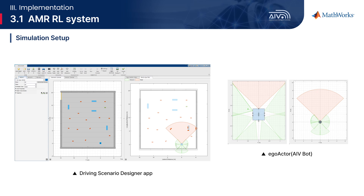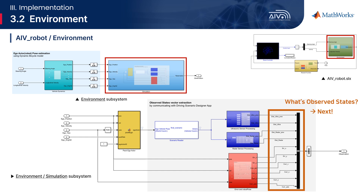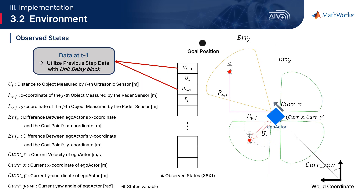We configured it conveniently through the GUI, equipping the AMR with one radar and six ultrasonic sensors. The following is the environment subsystem that receives speed and steering commands from the agent. In the vehicle dynamics subsystem, the bicycle dynamics model block calculates the AMR's pose at discrete intervals. The pose of the ego actor from the vehicle dynamics model is converted into a bus signal and transmitted to the Driving Scenario Designer app. The blue and red subsystems perform pre-processing by scaling the observation values between 0 and 1. The observed states vector is structured as a 38-by-1 vector. The observations include the position and distance of objects obtained from the ultrasonic and radar sensors, the error relative to the target point, the current speed, and pose data.